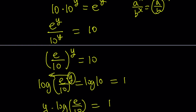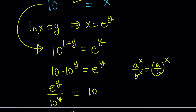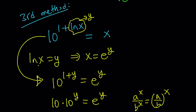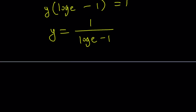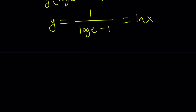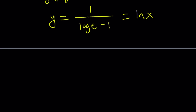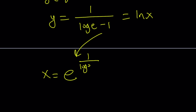Dividing both sides by that gives y equals 1 over log e minus 1. Remember, y is ln x, so we set this equal to ln x and do e to the power of both sides. So x is going to be e to the power 1 over log e minus 1.